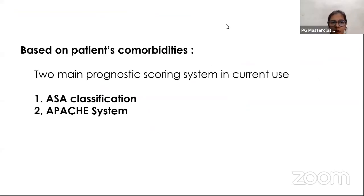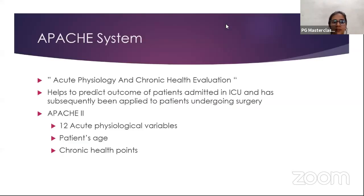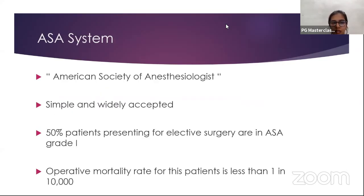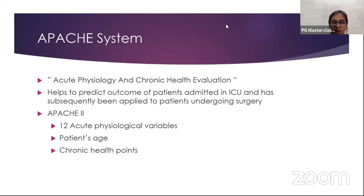Based on the patient's comorbidities, two main prognostic scoring systems are in current use. The first is the ASA classification, which is the most commonly and widely used. The second is the APACHE system — Acute Physiology and Chronic Health Evaluation — which helps predict outcome of patients admitted to the ICU. It was previously used only for ICU patients but has now been applied for surgical patients as well. It includes 12 acute physiological variables, the patient's age, and chronic health points.